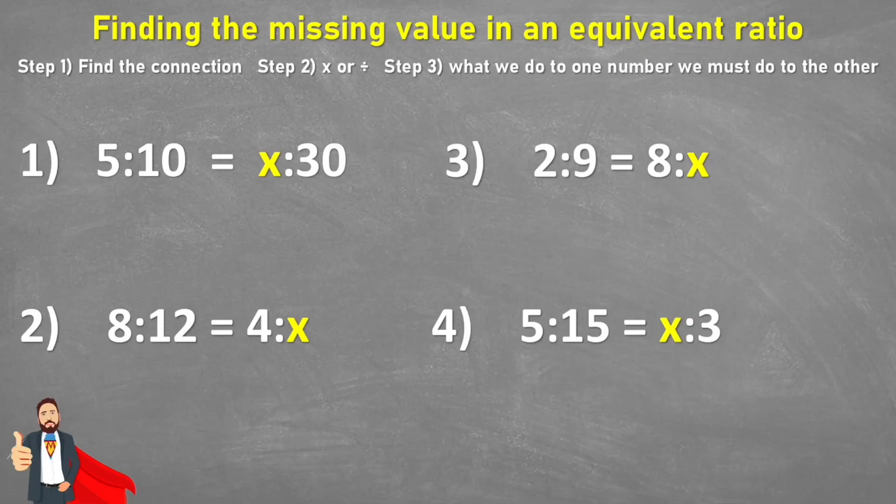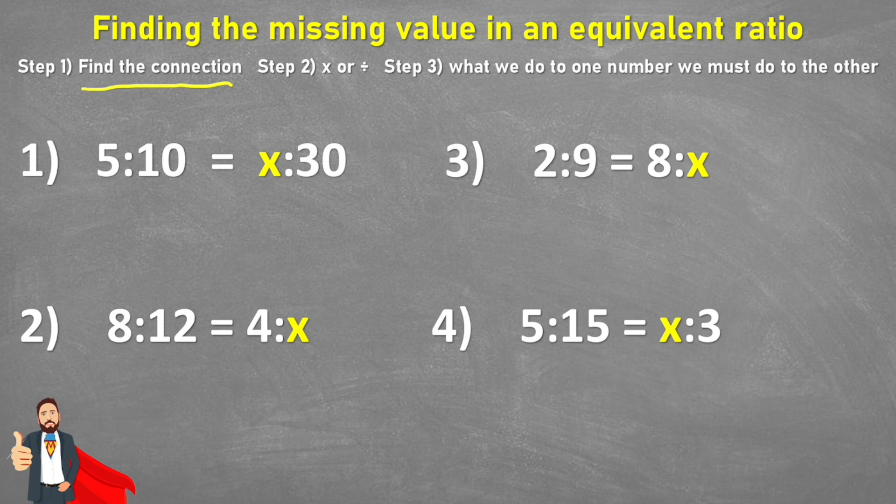And to do that we're going to follow these three steps. First we're going to find the connection, which means find the connection between the two sets of ratios. Then we're going to use multiplication or division to help us. And then step three, what we do to one of the numbers we must then do to the other.